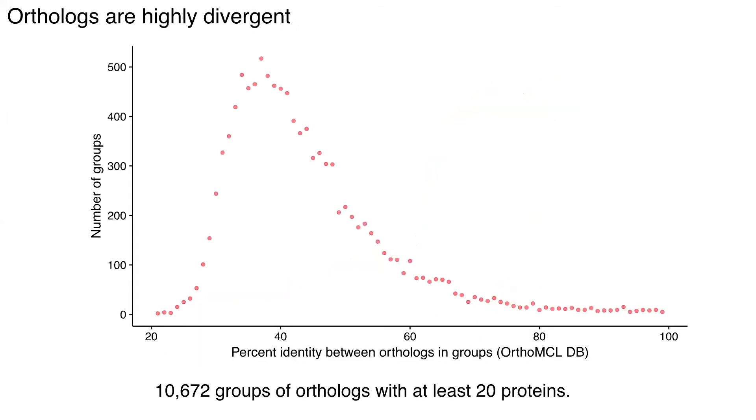And so in addition to that, even for sequences which have the exact same function, here I'm showing the distribution in terms of percentage identity for a whole bunch of groups of orthologs with the exact same function. So even within sequences that catalyze the exact same function, there's huge diversity.